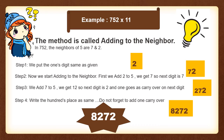In the last step, because 7 is at the 100s place, we add the carry over 1 to 7, giving us 8. So the final answer is 8272.